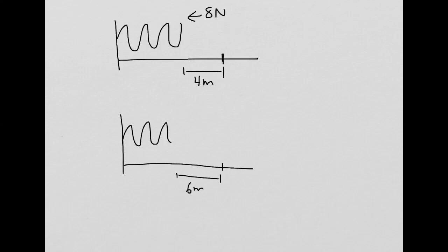We know that force is equal to negative kx. The only thing I'm missing right now is k, but I gave you the first scenario where I gave you the force and the distance, so you can find k. Let's plug in what we know. We know that when I apply a force of 8 newtons, the spring compresses by 4 meters. I can solve for k — just divide by 4 — so I get that negative 2 equals k.